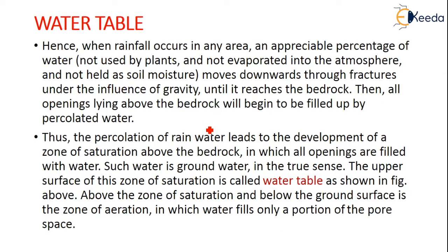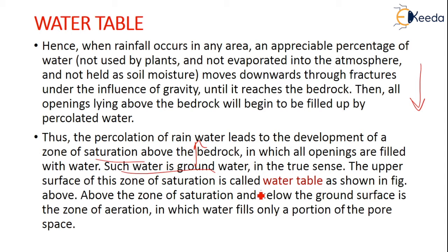When rainfall occurs in any region, an appreciable percentage of water not used by plants, not evaporated into the atmosphere, and not held by soil moisture moves downward through the fractures under the influence of gravity until it reaches the bedrock. All the openings above the bedrock begin to be filled with the percolated water. This downward seepage leads to the development of a zone of saturation above the bedrock, in which all openings are filled with water. Such water is groundwater in the true sense. The upper surface of this zone of saturation is known as the water table. Above the zone of saturation and below the ground surface there is a zone of aeration in which water fills only a portion of the pore space.